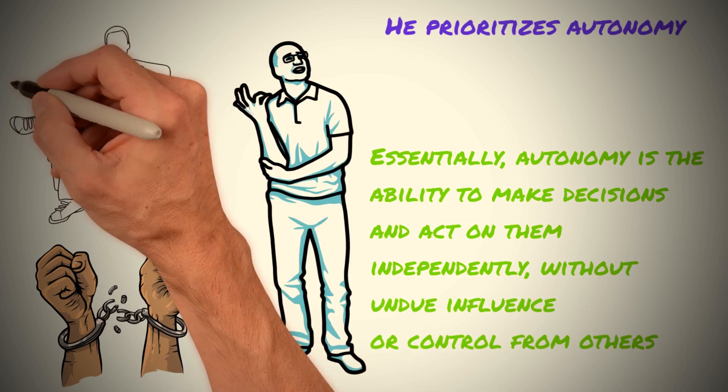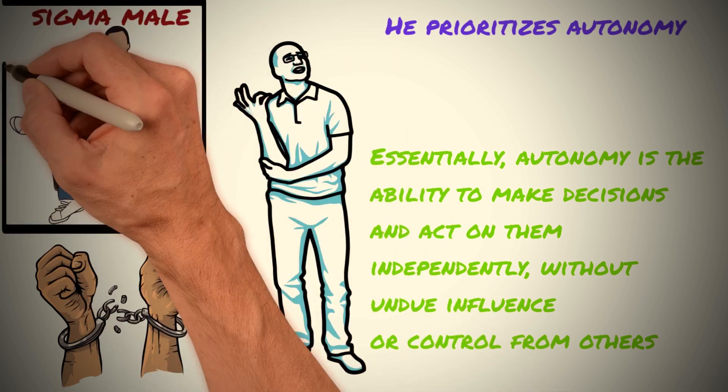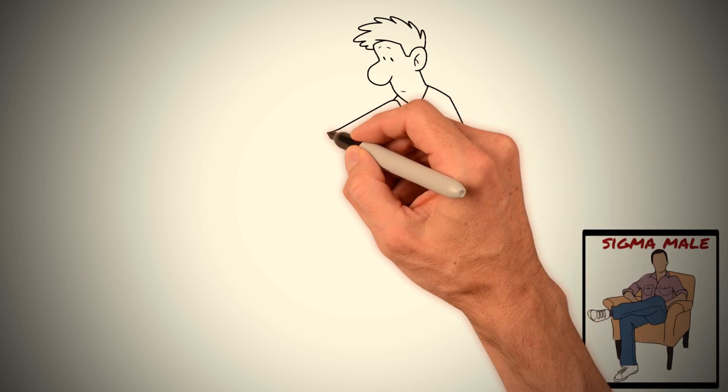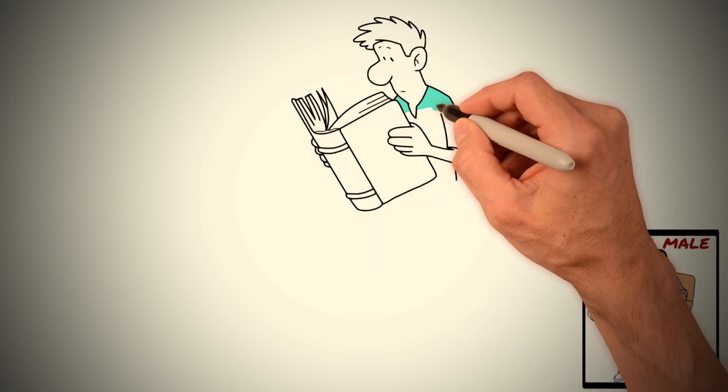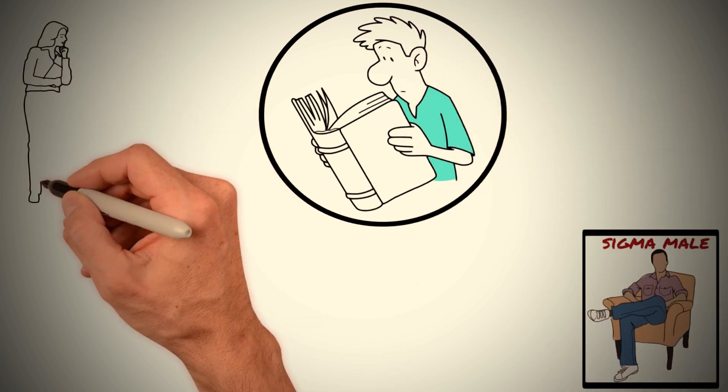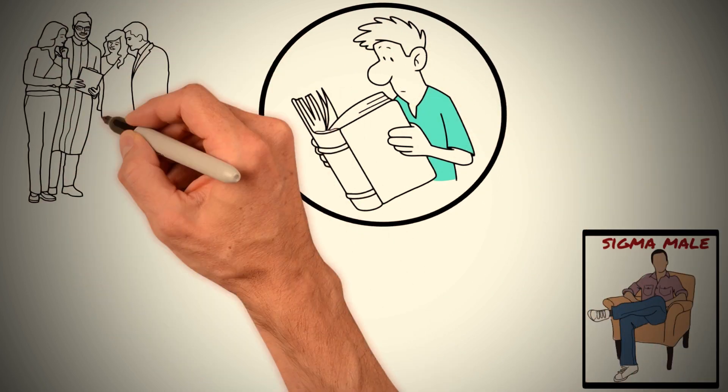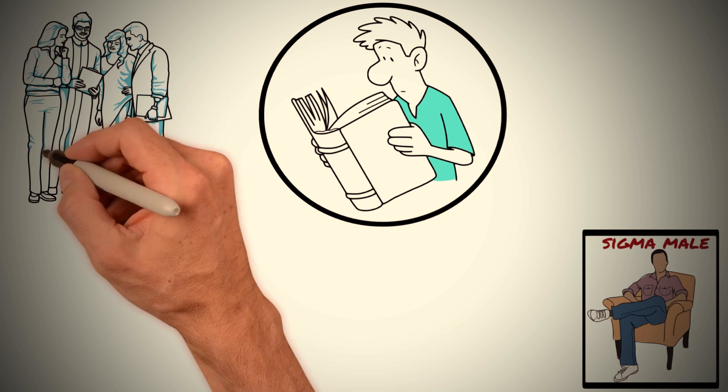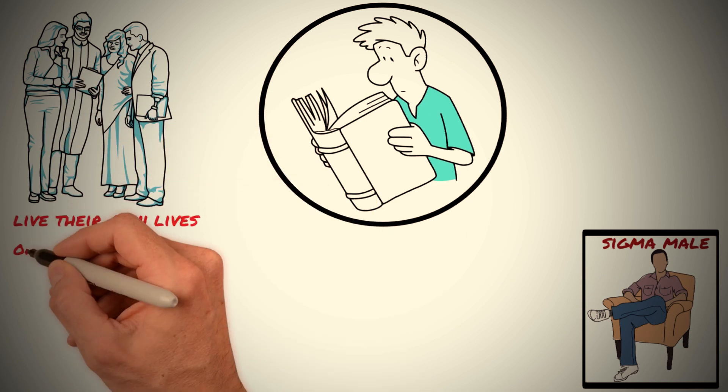One group that particularly values autonomy and independence is Sigma males. Sigma males are often seen as outsiders or loners who prioritize their individuality and resist conforming to social norms or expectations. They value their autonomy and independence, and they also respect others' right to make their own decisions and live their own lives on their terms.